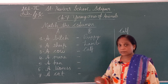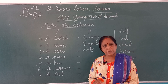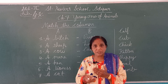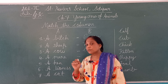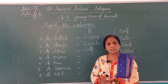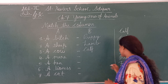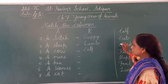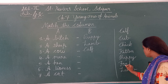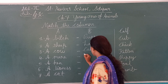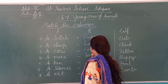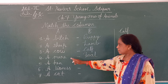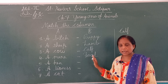Now number four — a Mare. M-A-R-E, mare मतलब घोड़ी। तो उसका जो छोटा-सा बेबी होता है, उसको क्या बोलते हैं? Did you remember? तो उसको बोलेंगे Foal — F-O-A-L. तो यहाँ पर लिखेंगे F-O-A-L. You have to remember: a mare का young one है Foal. Next — a Hen.